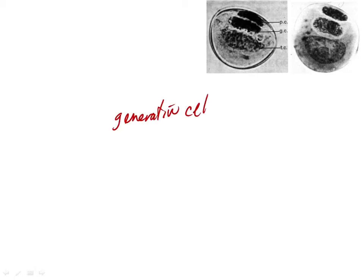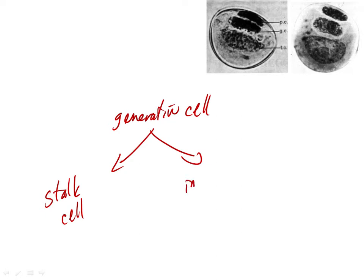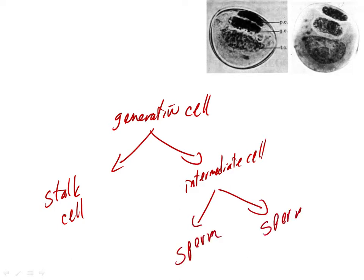The generative cell doesn't give rise to the sperm directly — there are a couple of cell divisions to get the sperm. The generative cell is haploid; the sperm are haploid. There's a couple of cell divisions intermediate between production of those two — so there's a little bit of growth of the gametophyte, not very much, but a little.